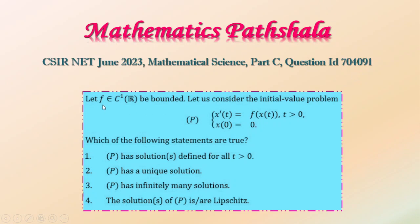Here the problem is: let f belongs to C¹(R) be bounded and let us consider this IVP where x'(t) equals f(x(t)) where t greater than 0 and the initial condition is given x(0) equals 0. Which of the following statements are true?